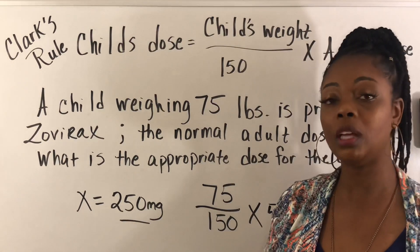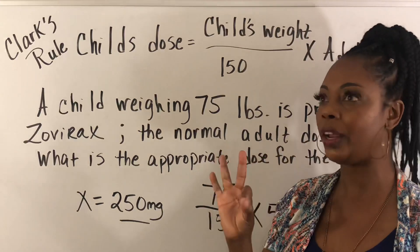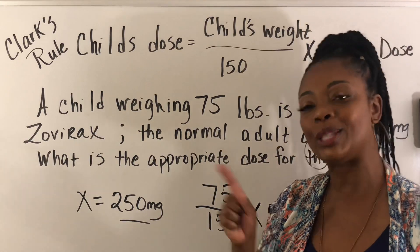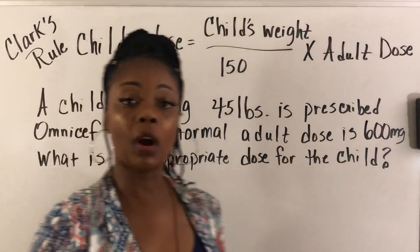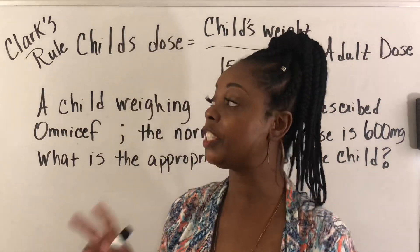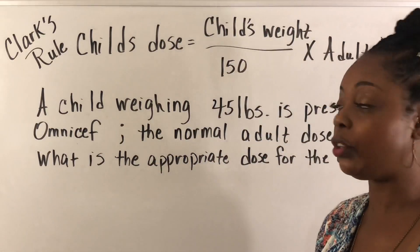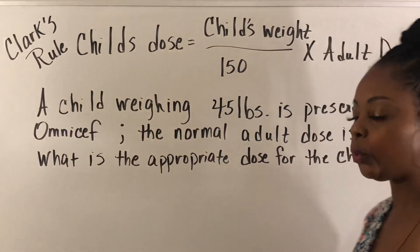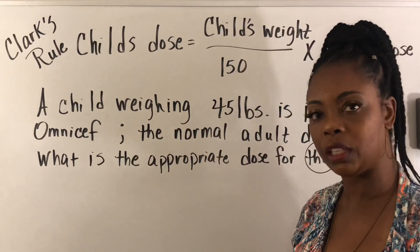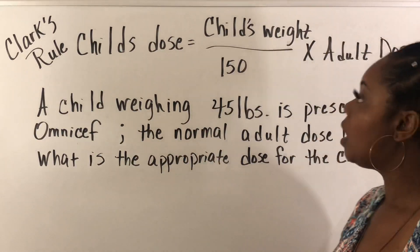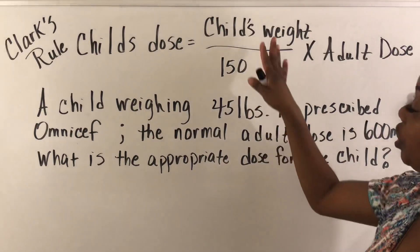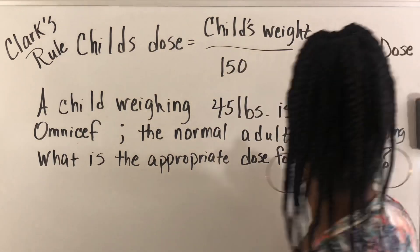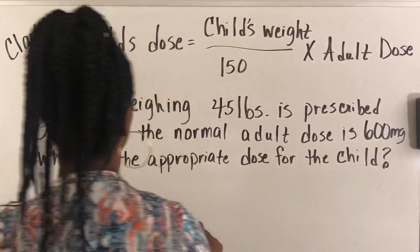Let's go on to problem number three. We'll have two more problems after this one. Still using Clark's Rule, still the same formula: child's weight divided by 150 times the adult dose.